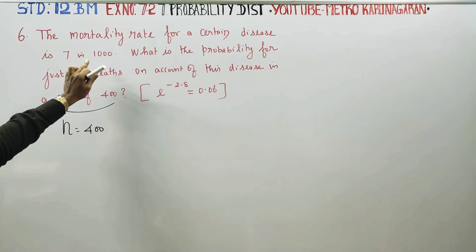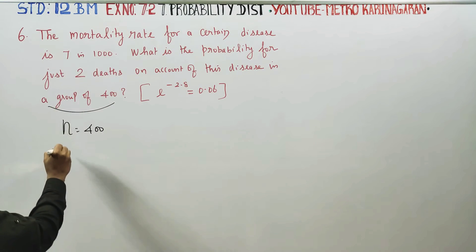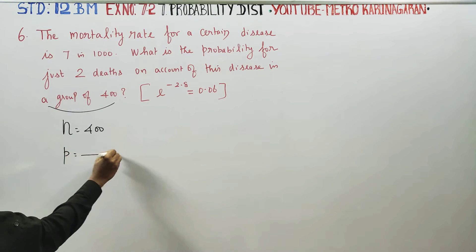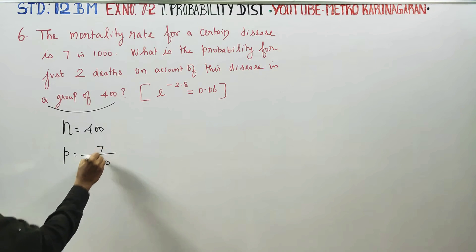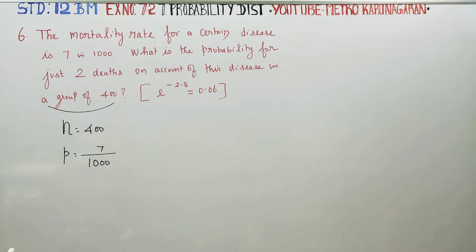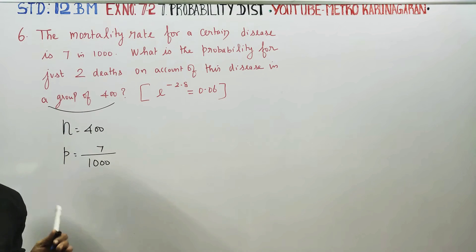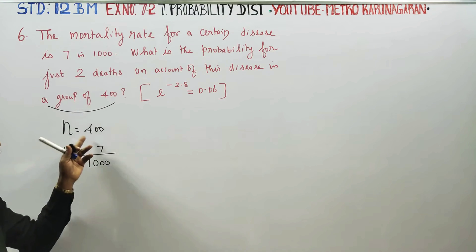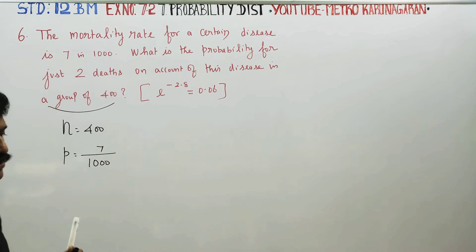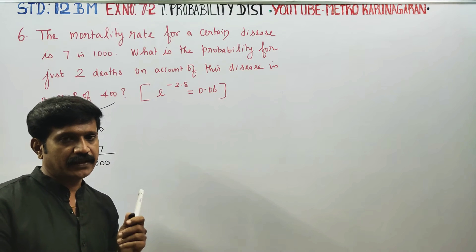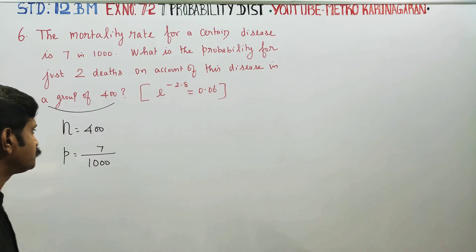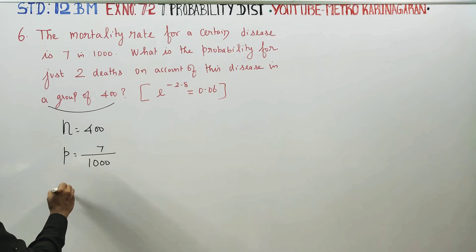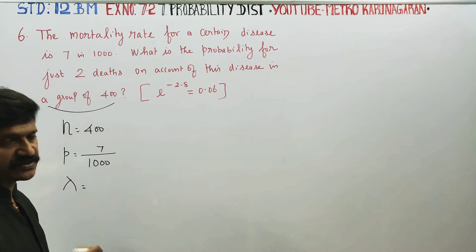The probability of death is 7 divided by 1000, the mortality rate for a certain disease. This problem uses the Poisson distribution. The parameter is the Poisson distribution's lambda.